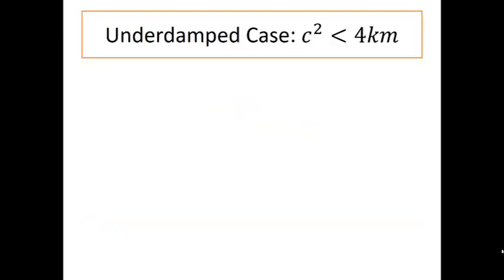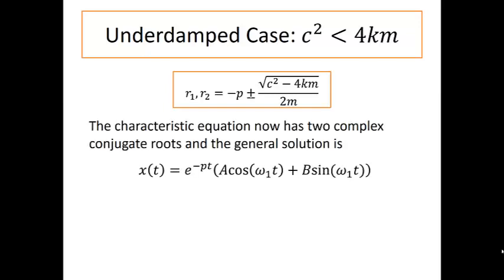Our last option is what we call the under damped case when C squared is smaller than 4KM. Again going back to that formula for our roots, in this case that piece under the square root will be negative. So our characteristic equation now has two complex conjugate roots. The general solution looks like e to the minus P T times a constant multiple of cosine plus a constant multiple of sine.